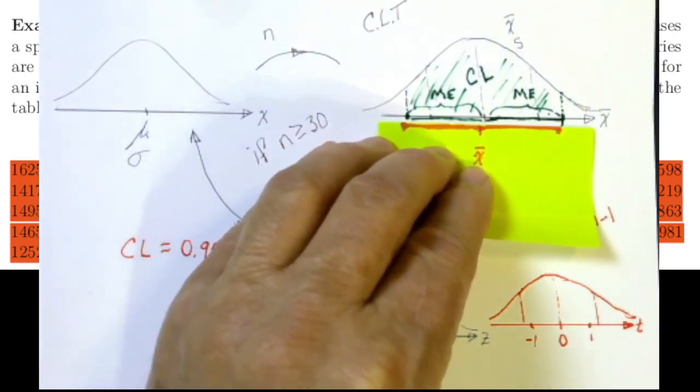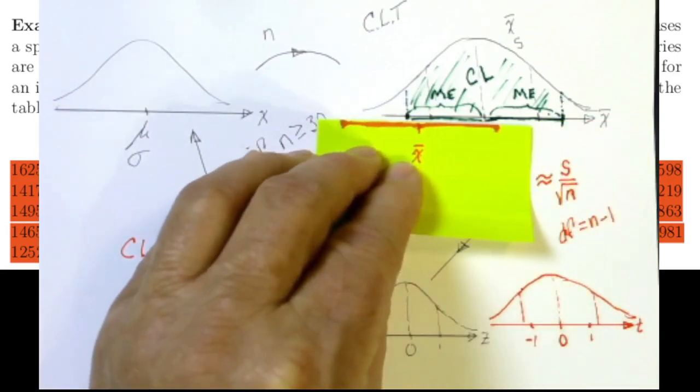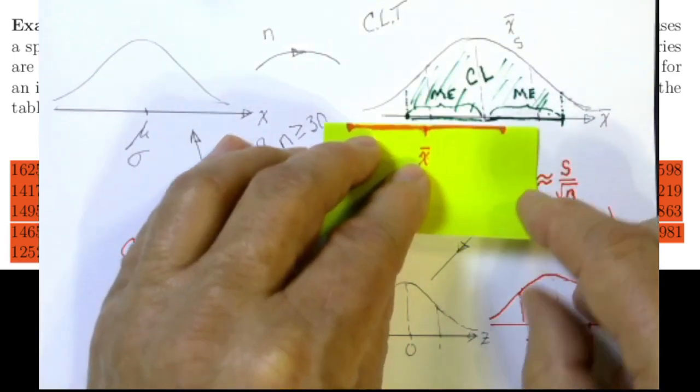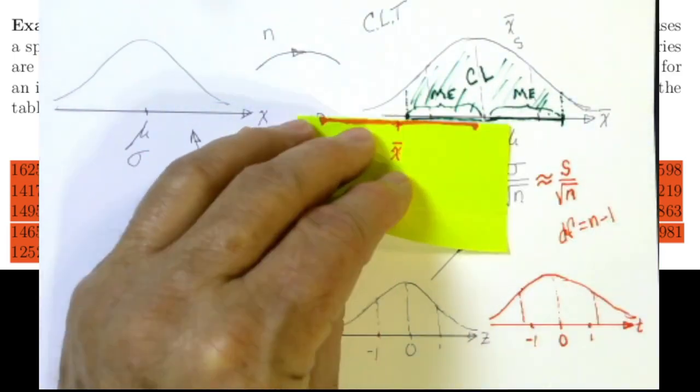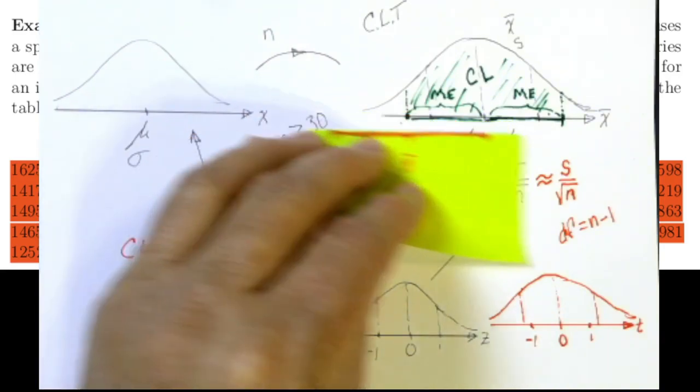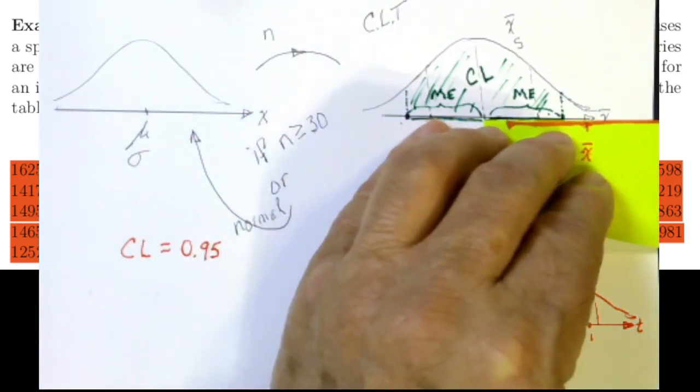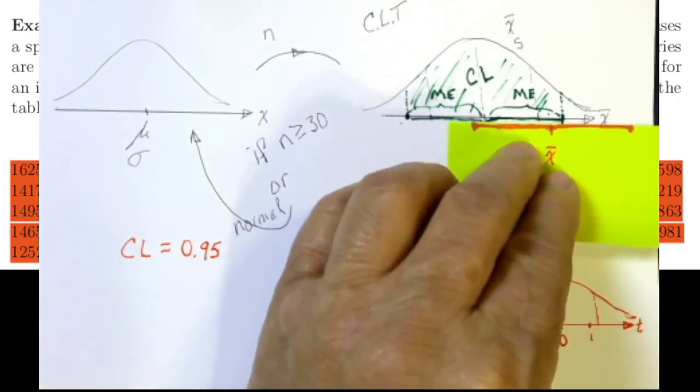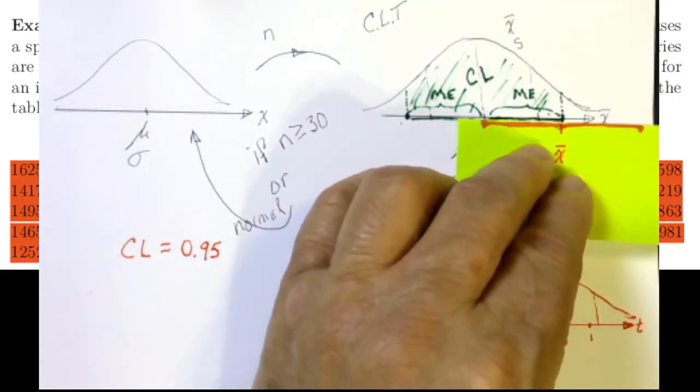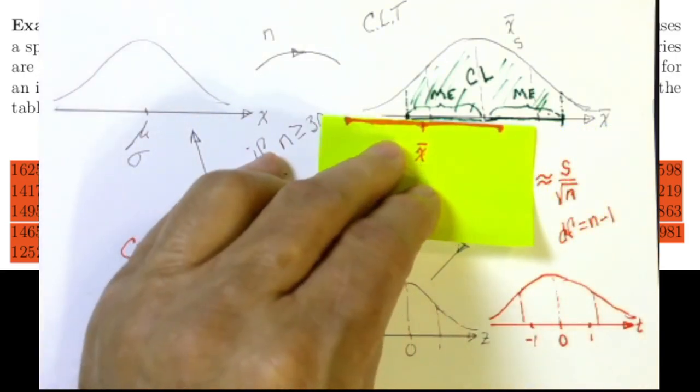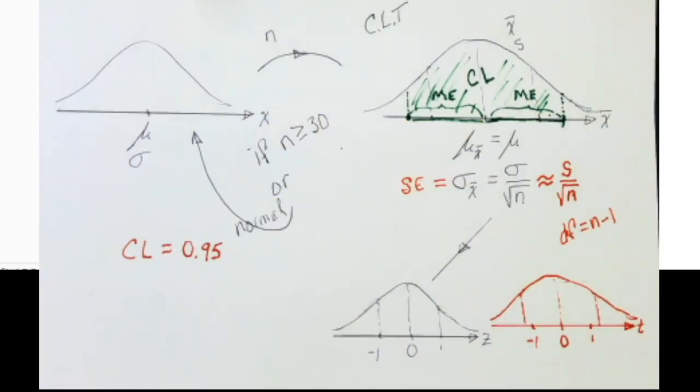So we're therefore 95% confident that this interval that we've built will actually contain the real population mean. Of course, there's a 2.5% chance that we end out here in the lower tail, or another 2.5% that we end up up here. There's a 5% chance that we miss the population mean, but we're 95% confident that this interval that we built is going to contain that population mean.